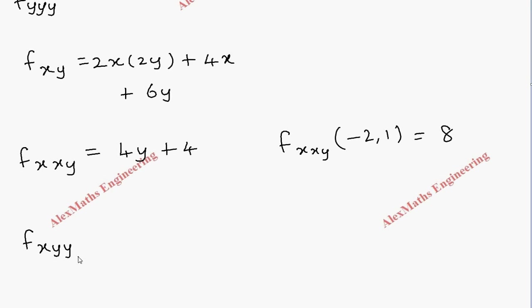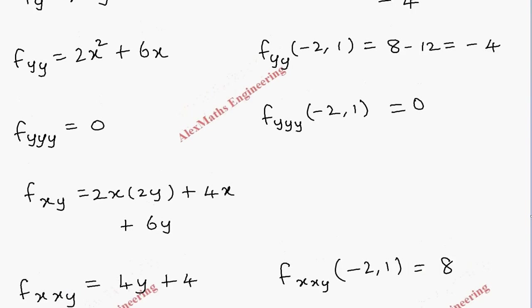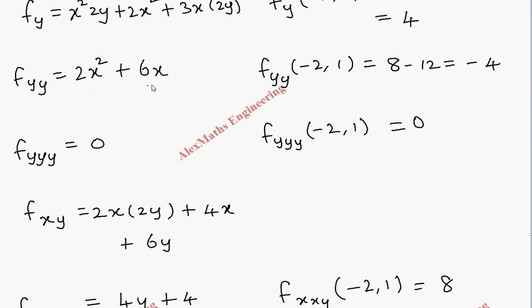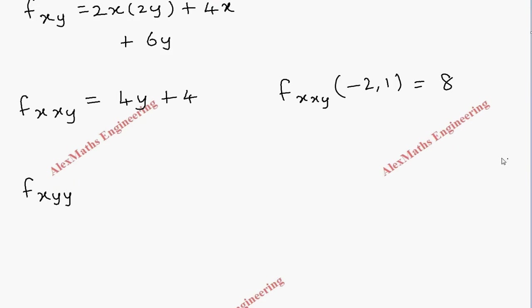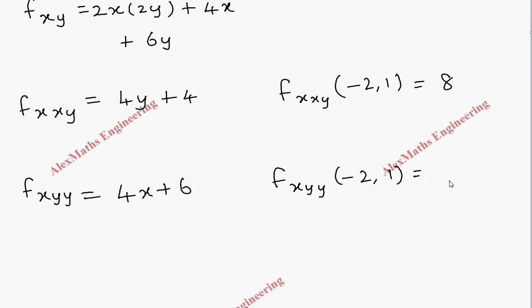For fxyy, we differentiate fyy = 2x² + 6x with respect to x: fxyy = 4x + 6. Evaluating at (-2, 1): 4(-2) + 6 = -8 + 6 = -2. So fxyy(-2, 1) = -2.